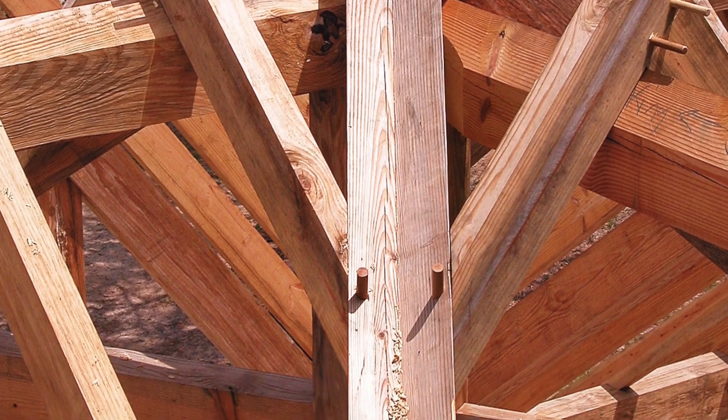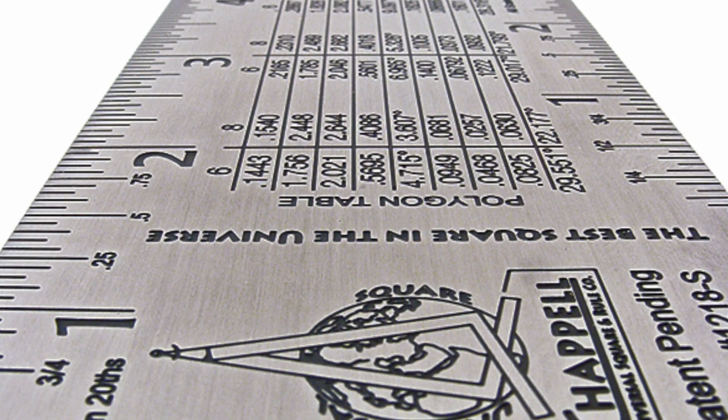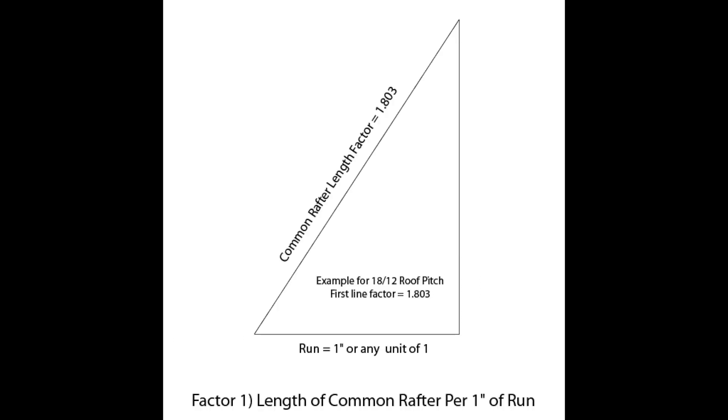Let's begin by defining the first aspect: length of common rafter per inch of common run. The numbers listed on this line, below any of the inch markings from 2 to 18, give the ratios of the length of the common rafter per one inch of common run, for a roof pitch corresponding to the column number in inches over a run of 12 inches.